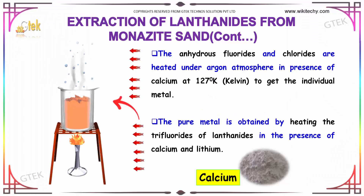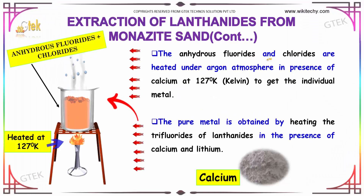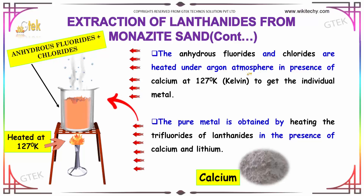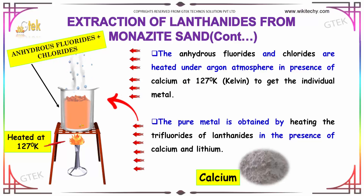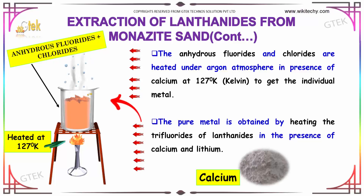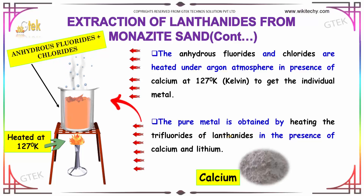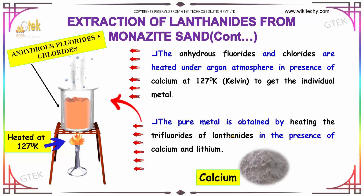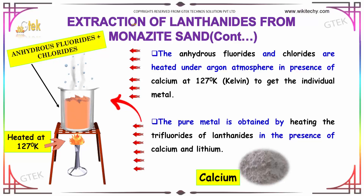The anhydrous fluorides and chlorides are heated under an argon atmosphere in the presence of calcium at 1270 degrees Kelvin to obtain the individual metal. The pure metal is obtained by heating the trifluorides of lanthanides in the presence of calcium and lithium. This completes the extraction of lanthanides from monazite sand.